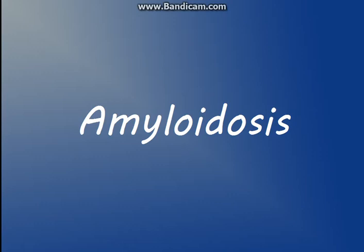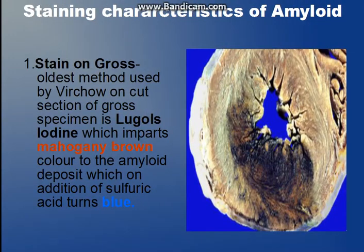Hello everyone, today we are going to discuss the second part of the amyloidosis video. In the first part we studied the general features, the introduction, the physical characteristics, and the pathogenesis of amyloidosis. Now we are going to the staining characteristics of the amyloid.